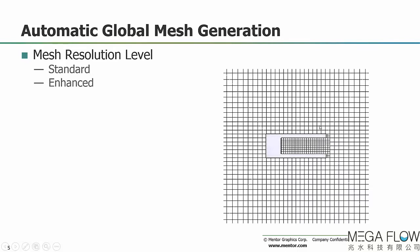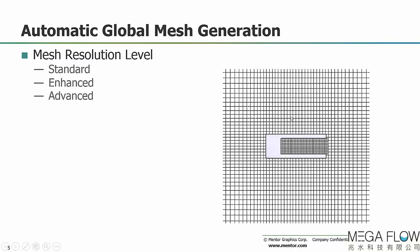Moving up to enhanced, the cells on the outside are smaller and cells split once to capture the narrow channel area, giving more cells in that channel. Going to advanced gives smaller cells yet and a finer mesh within the channel. With local mesh controls, we can control the mesh within these channels somewhat independently of what's going on on the outside.